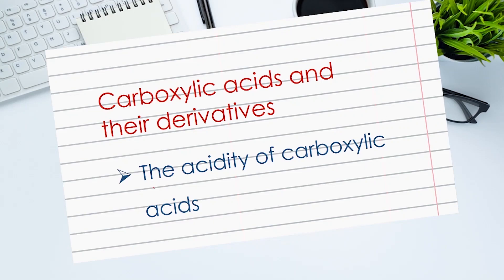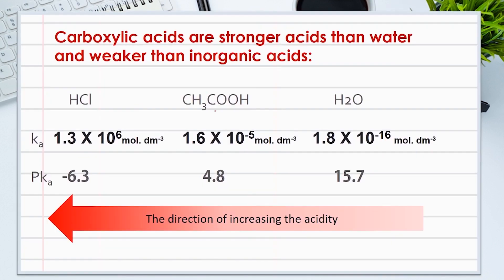Carboxylic acids. Our first topic in carboxylic acids is the acidity of carboxylic acids. Carboxylic acids are weak acids. Their acidity is higher than water but lower than inorganic acids. Here you can see the Ka values decrease from hydrochloric acid, which is equal to 1.3 × 10⁶ mol/dm³, to 1.6 × 10⁻⁵ mol/dm³ for acetic acid, and it is even lower for water at 1.8 × 10⁻¹⁶. Remember, the smaller the Ka value, the weaker the acid.